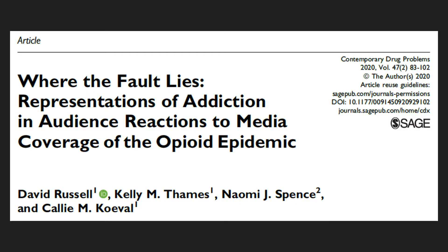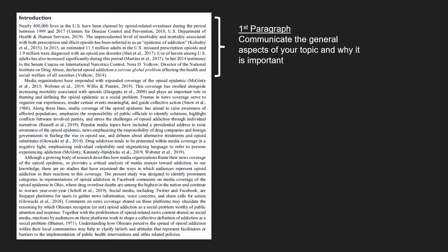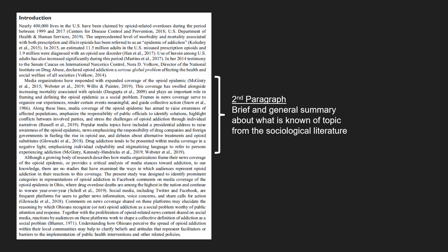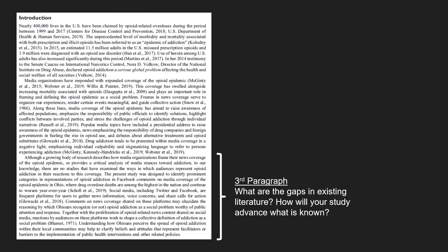I'd like to provide you an example of how I wrote an introduction from a recent paper about how addiction is represented in media coverage of the so-called opioid epidemic. This introduction included three paragraphs. The first paragraph communicates the general aspects of the topic and why it's important. The second paragraph communicates a brief and general summary of what is known about this topic from the sociological literature. The third paragraph explains what the gaps are in the existing literature and how the study will advance on what is already known.